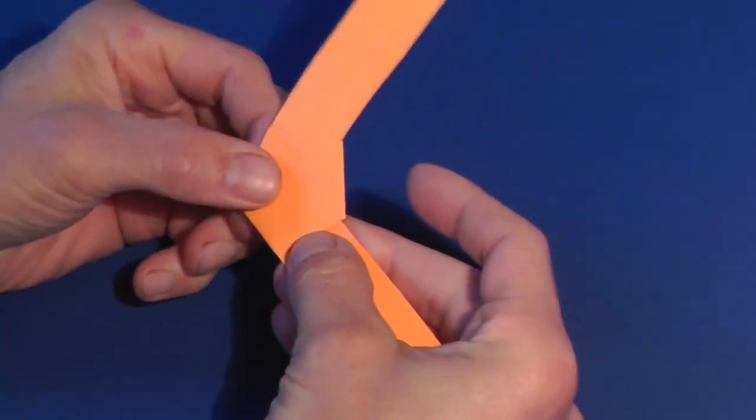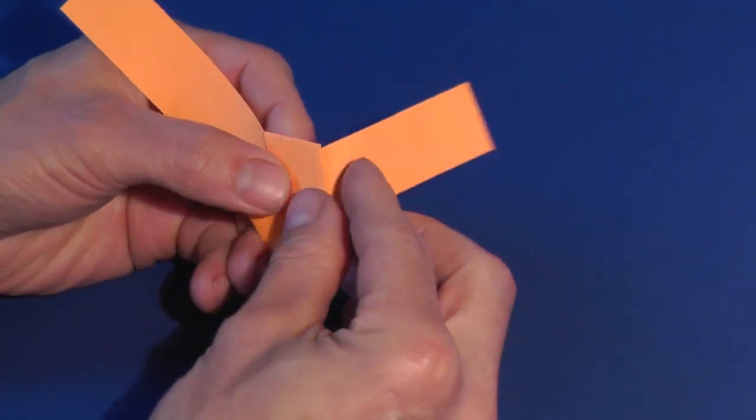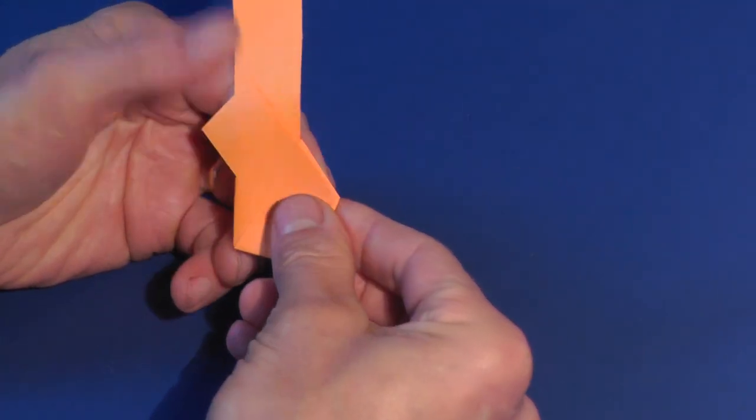When the knot is flattened, it forms a pentagon. You can cut off the extra paper or fold it around the knot.